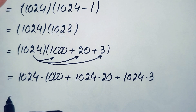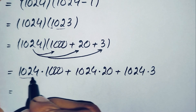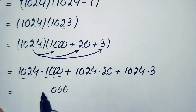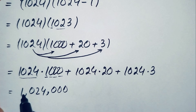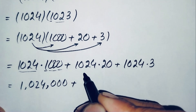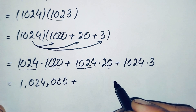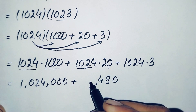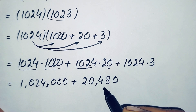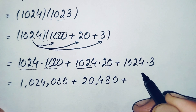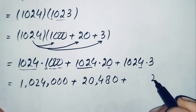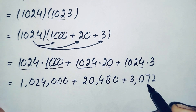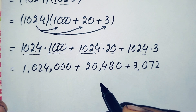Computing each partial product: 1024 times 1000 equals 1,024,000. Then 1024 times 20: 2 times 1024 gives 2048, so 1024 times 20 equals 20,480. Then 1024 times 3: 3 times 4 is 12 (carry 1), 3 times 2 is 6 plus 1 is 7, 3 times 0 is 0, 3 times 1 is 3 — giving 3072.